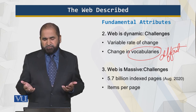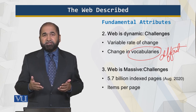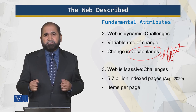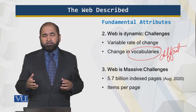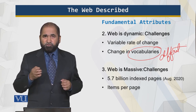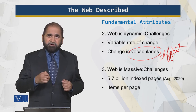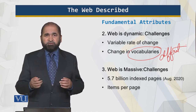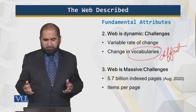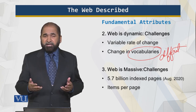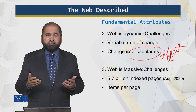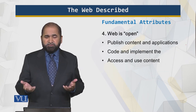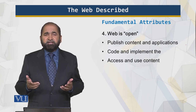The web is massive — 5.7 billion indexed pages as of August 2020. It is almost impossible for a search engine to smartly and intelligently find what you are looking for because of its humongous size. And if you look at the items per page, the volume further increases.